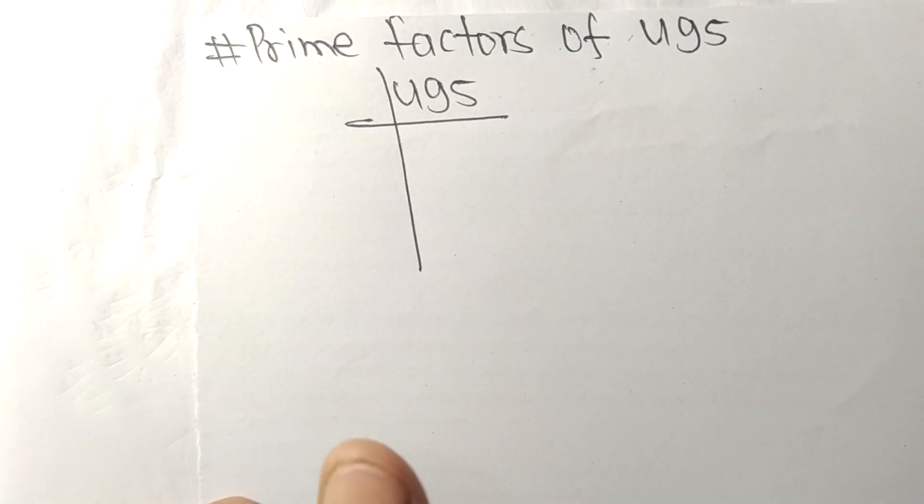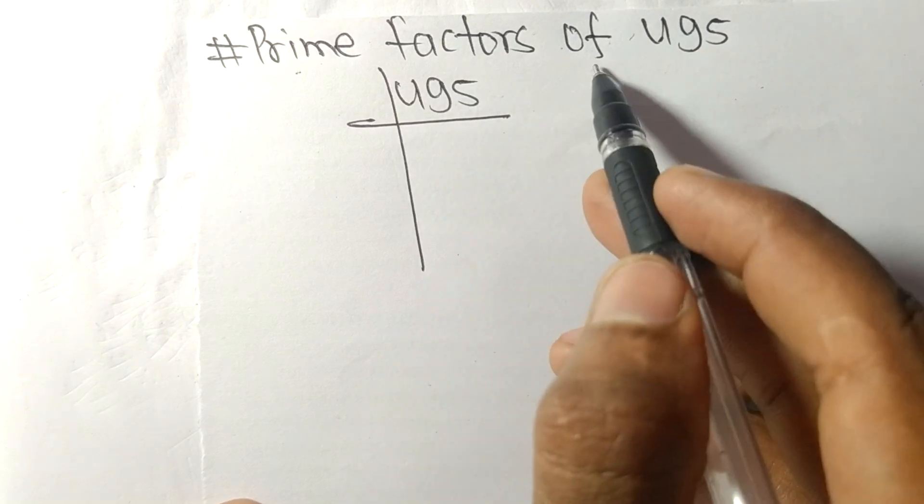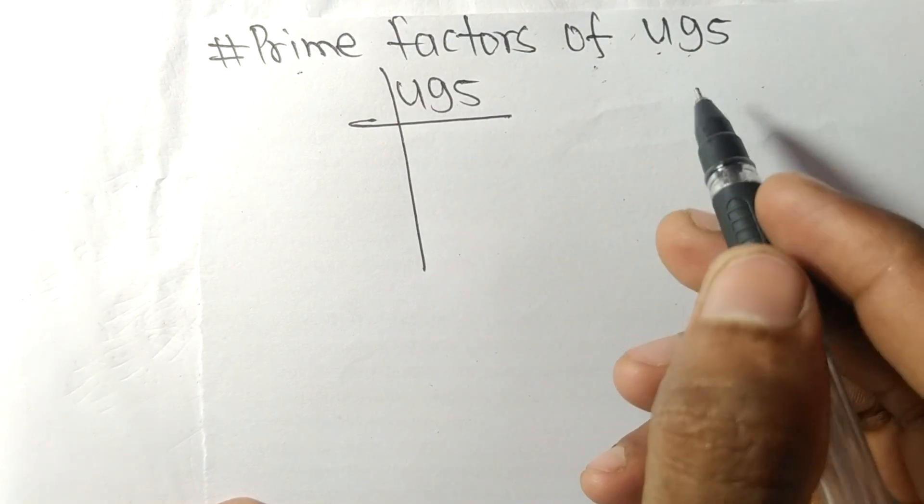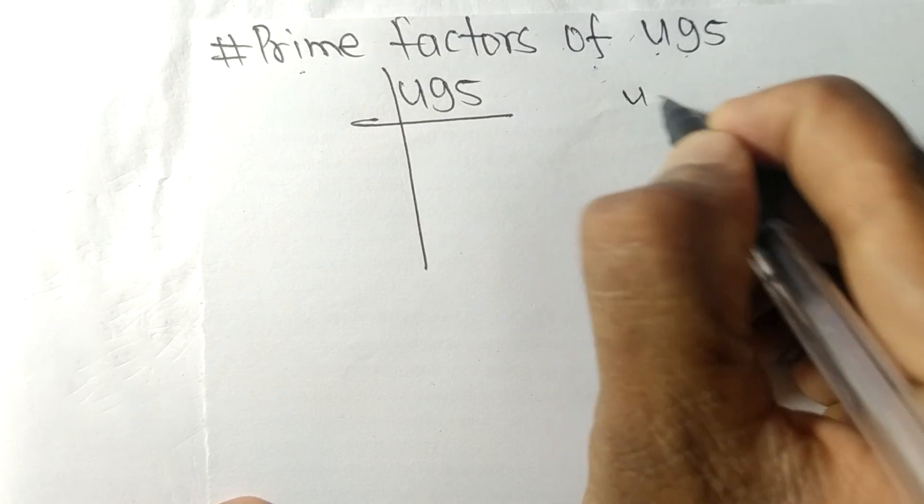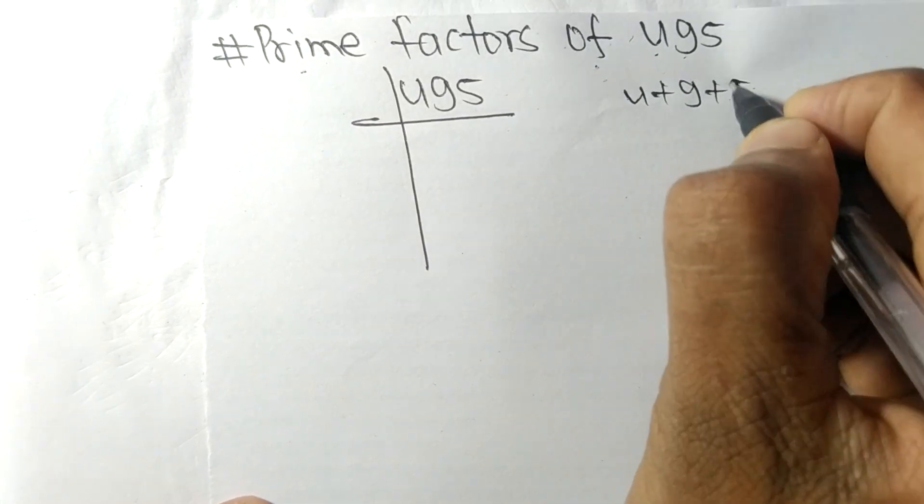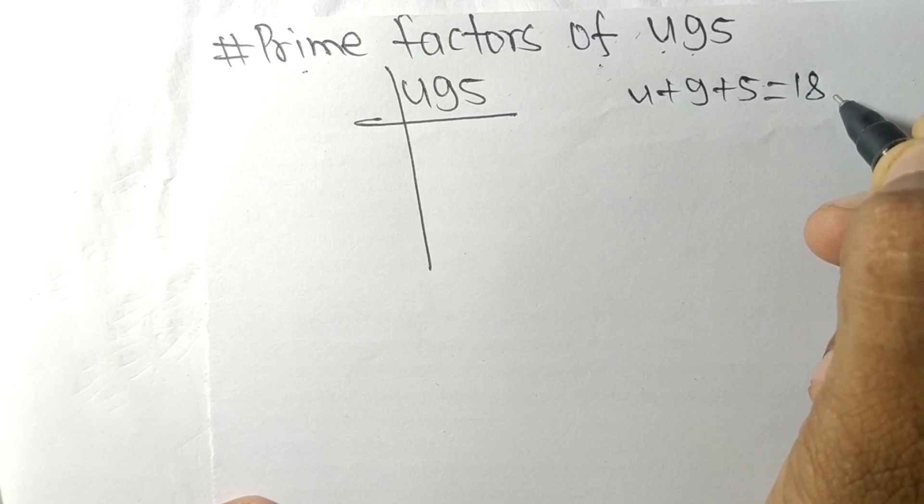Today in this video we shall learn to find the prime factors of 495. When we add all these numbers, 4 plus 9 plus 5, we get 18, and 18